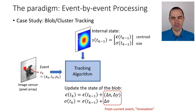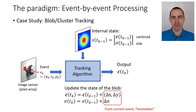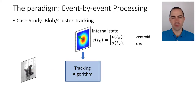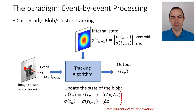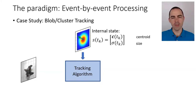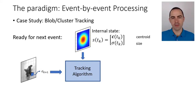Delta x, delta y could be a vector pointing from the centroid of the blob toward the new event, but it could follow any other rule. This produces an output — if we are only interested in the object's location, we simply output the centroid without needing to update the size. Once this output is generated, we update the internal state with what was computed. As you can see, it has moved a bit in the direction of the event, and now we are ready for the next event. That's the processing pipeline.